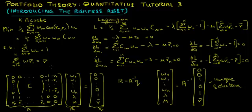We have learned how to solve for optimal weights when we have both risky and risk-free assets, with the aim of minimizing a portfolio's variance subject to certain constraints. If there are any questions or comments, please feel free to post. Thank you.